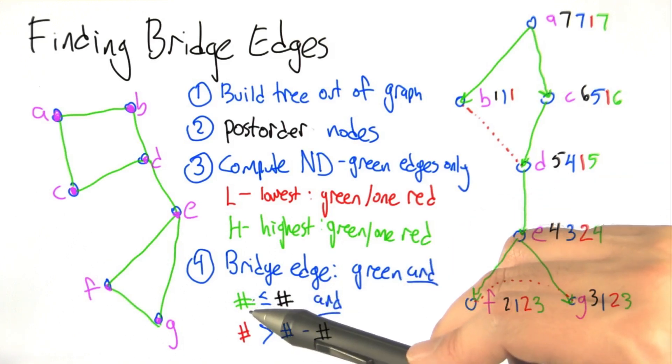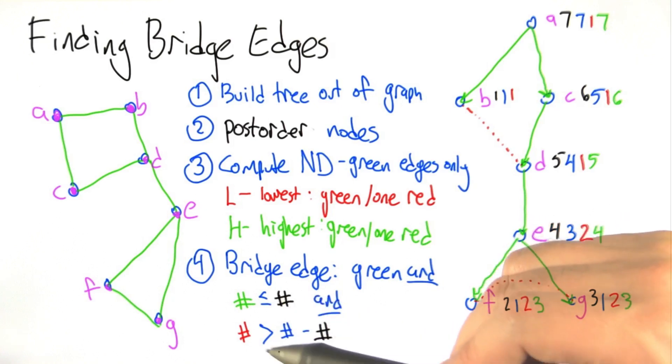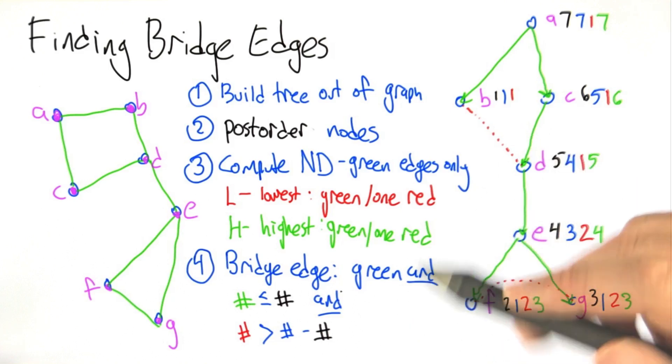Or in words, the H value has to be less than or equal to the post order value. The lowest value has to be bigger than the number of descendants minus the post order value. So apart from the fact that it's not immediately obvious why this is the right rule, let's apply it to the tree to see what gets picked out.